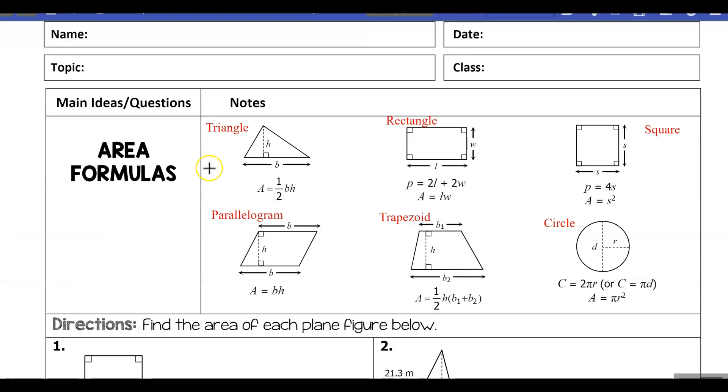Here's the six formulas we're going to work with. For the triangle we've got one-half base times height. For the rectangle, length times width. For the square, s squared where s is the length of a side. For a parallelogram, base times height. For a trapezoid, we're going to take the two bases and add them up, multiply it by the height, and then take half of that. And for a circle we have pi r squared where r is the radius.